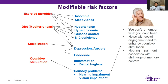Sensory problems are very common as we get older — cataracts, needing hearing aids. It's important to address those and get treatment. When it comes to hearing, you can't remember what you can't hear. Hearing helps us better engage in social settings and enhances our ability to take part in and make use of cognitive stimulation. There are even studies showing that untreated hearing impairment is associated with more shrinkage of the hippocampus, the memory centers.